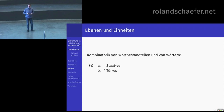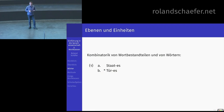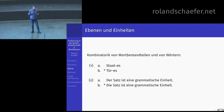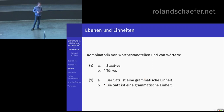Tür-s geht nicht. Warum kann man Staat mit S kombinieren und Tür nicht? Warum ist das nicht der Genitiv von Tür? Wir erklären, wie die Dinge zusammenhängen. Und auf einer nächsthöheren Ebene haben Sie wieder Wörter, wo wir nicht mehr in die Wortbestandteile reingucken müssen. Der Satz ist eine grammatische Einheit – geht. Die Satz ist eine grammatische Einheit – geht nicht. Wörter werden also auf eine bestimmte Weise zusammengebaut, und man kann diese Wörter wiederum kombinieren, aber nur auf bestimmte Weisen.